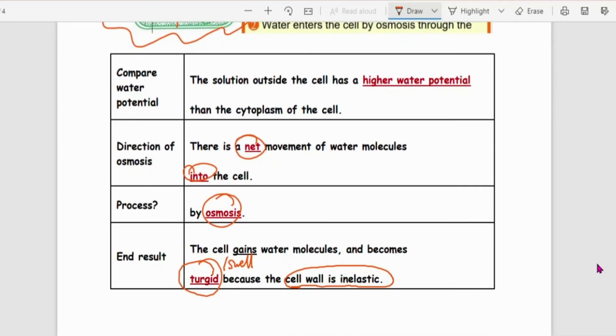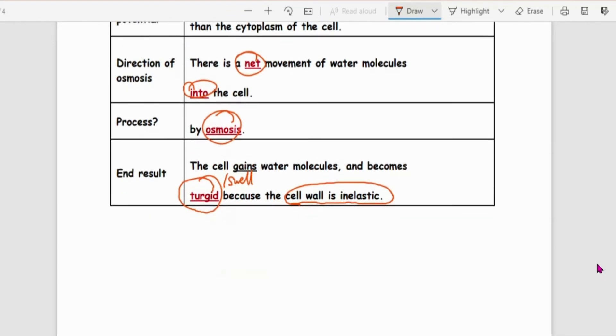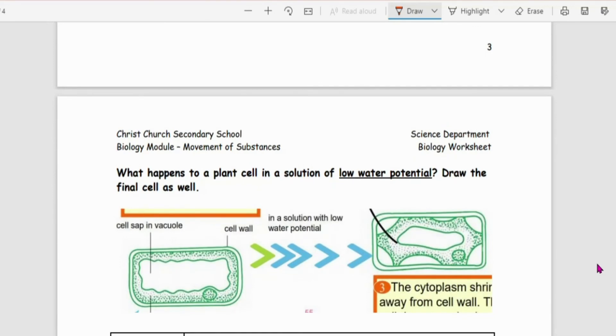So do take note of this idea here that the cell wall is inelastic. That's why the cell doesn't burst. Last one. Plant cell placed in low water potential. So this water, low water potential. So the water will all move out.